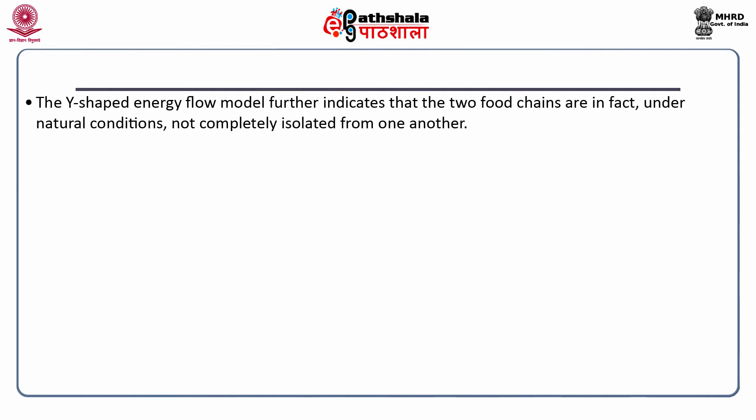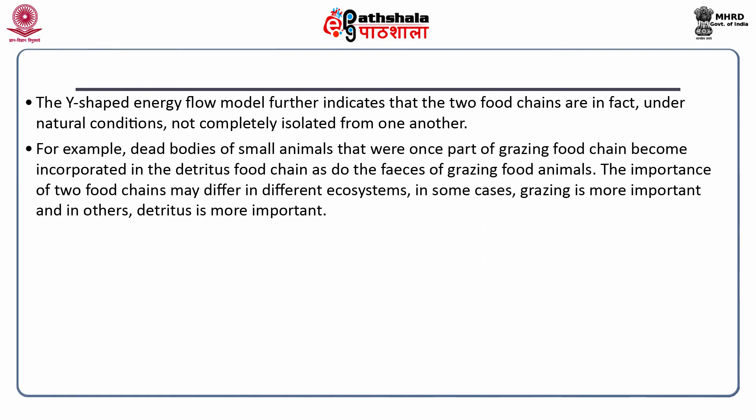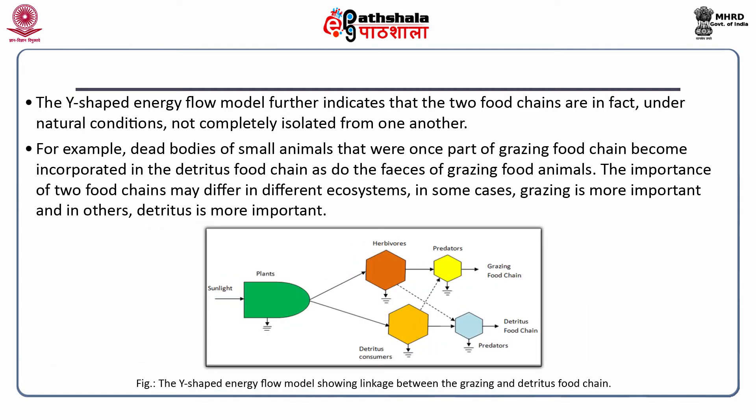The Y-shaped energy flow model indicates that the two food chains are, under natural conditions, not completely isolated from one another. For example, dead bodies of small animals that were once part of the grazing food chain become incorporated in the detritus food chain, as do the fecal matter of grazing food animals. The importance of the two food chains may differ in different ecosystems — in some cases grazing is more important, and in others detritus is more important. This figure shows the Y-shaped energy flow model and the linkage between the grazing and detritus food chains.